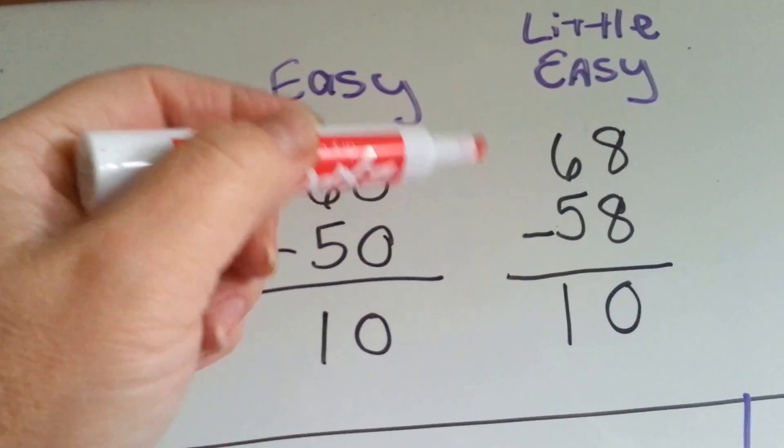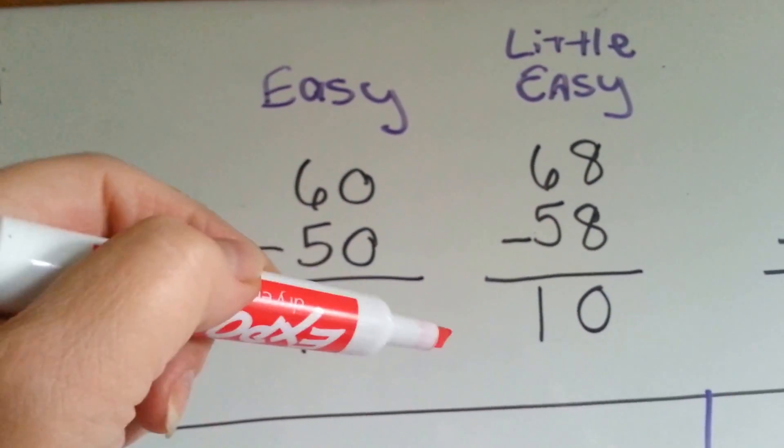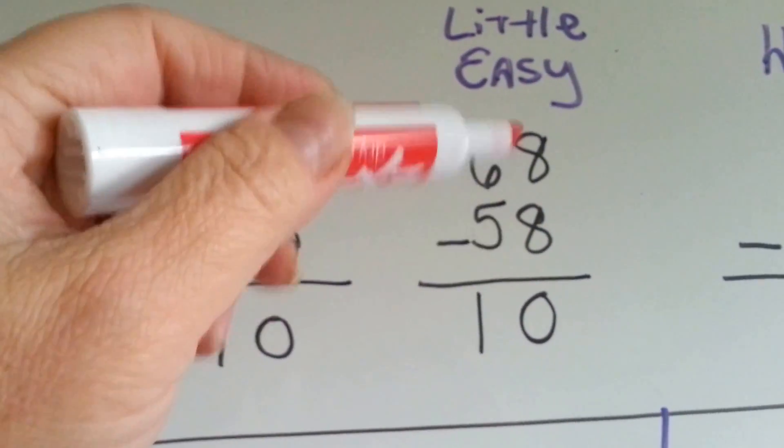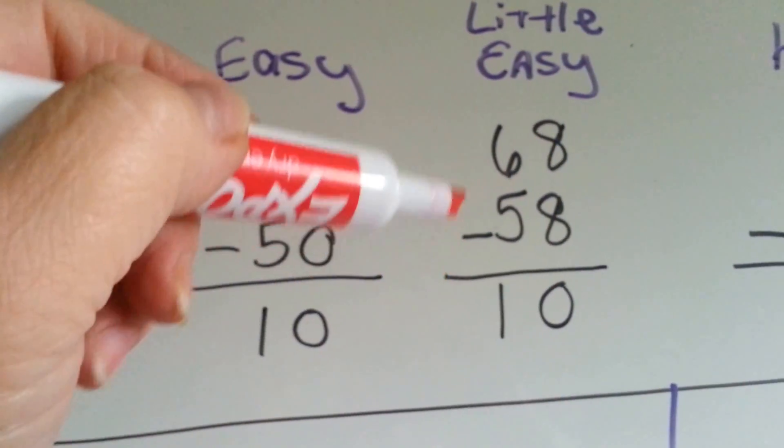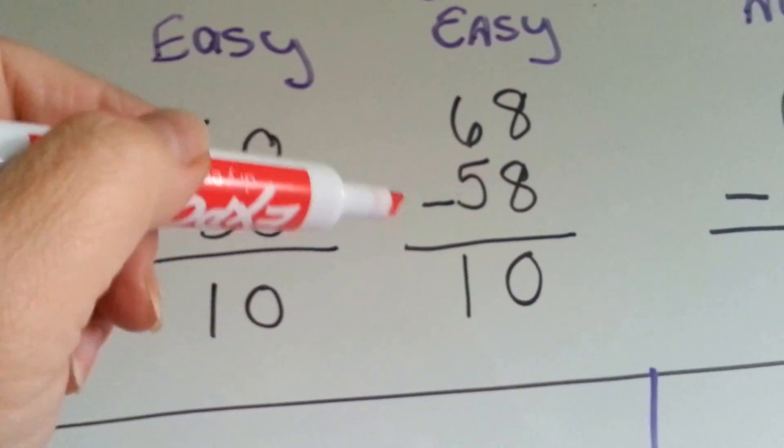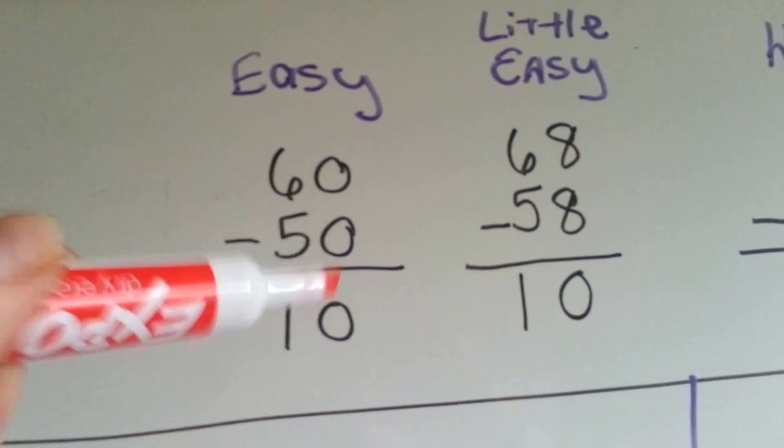This one's just a little bit harder. It's only a little easy because it's got numbers in the ones columns, but they're the same number. So it's still a little easy. 68 minus 58 is 10. There's a 10 difference. So that's not that hard.